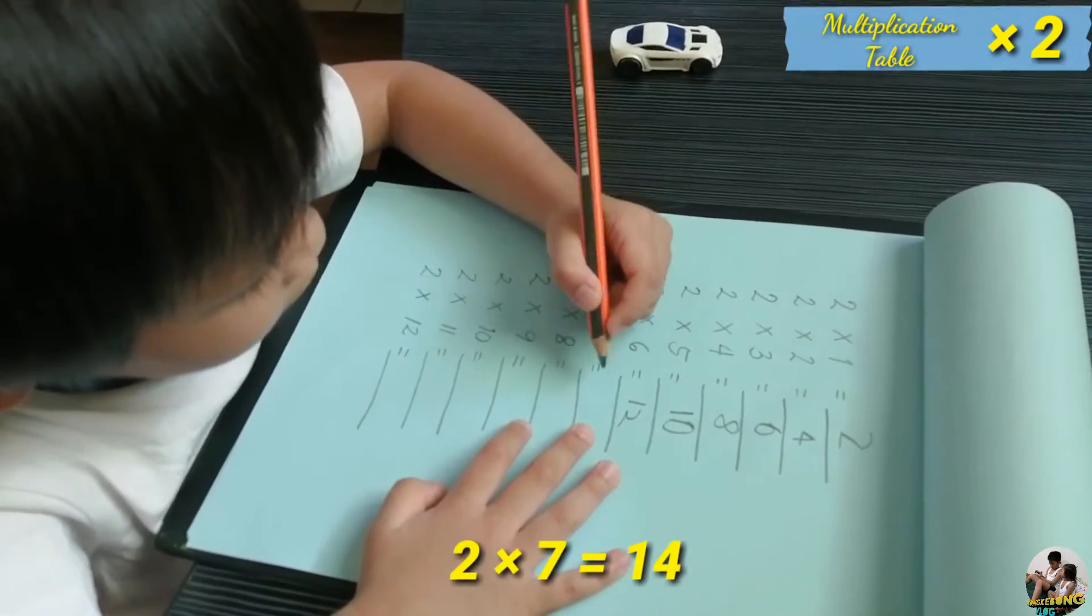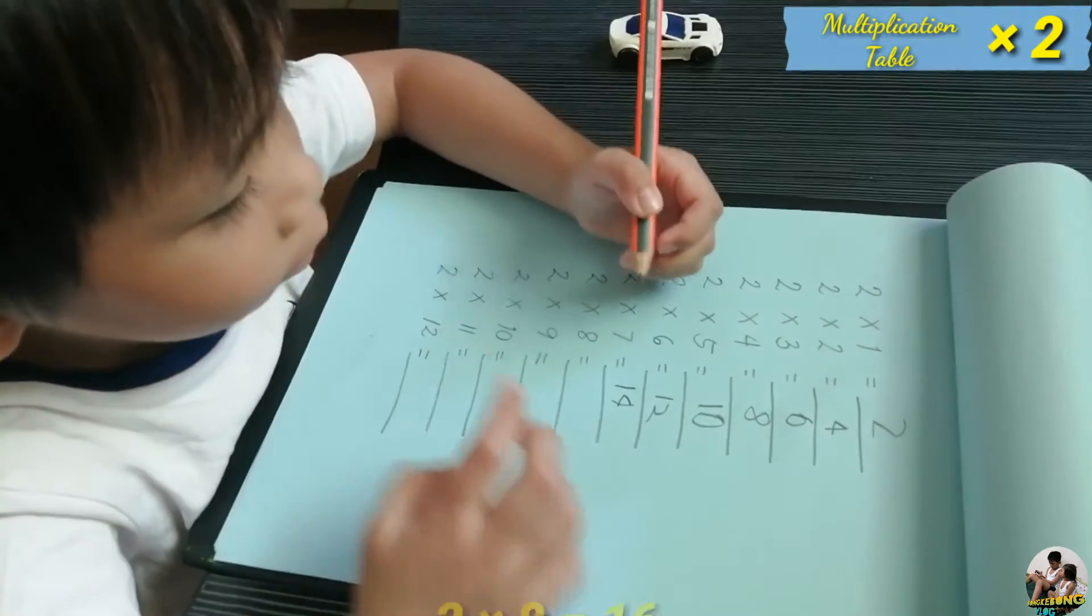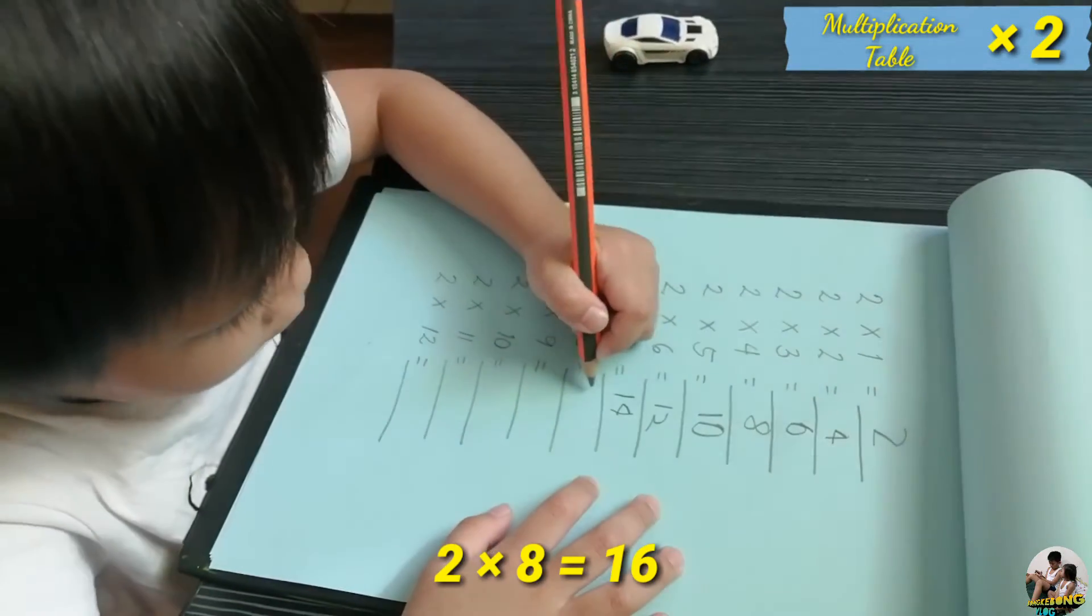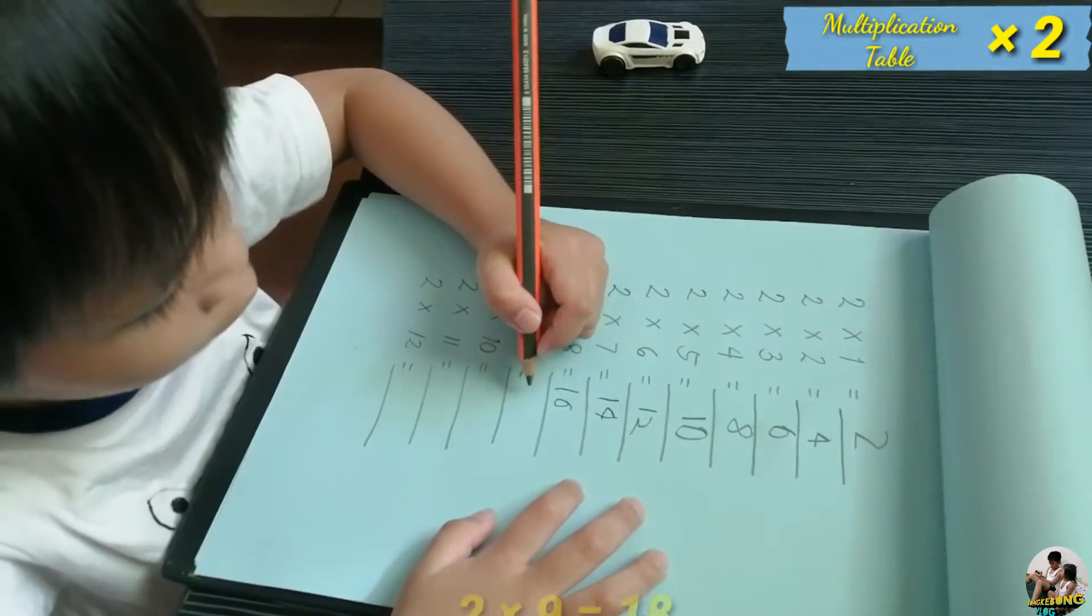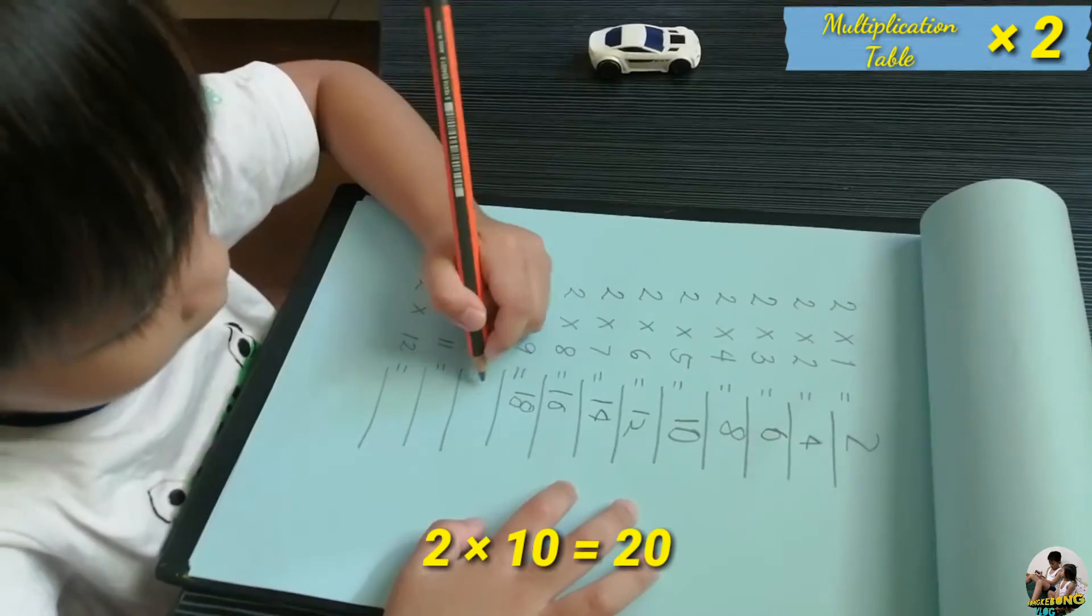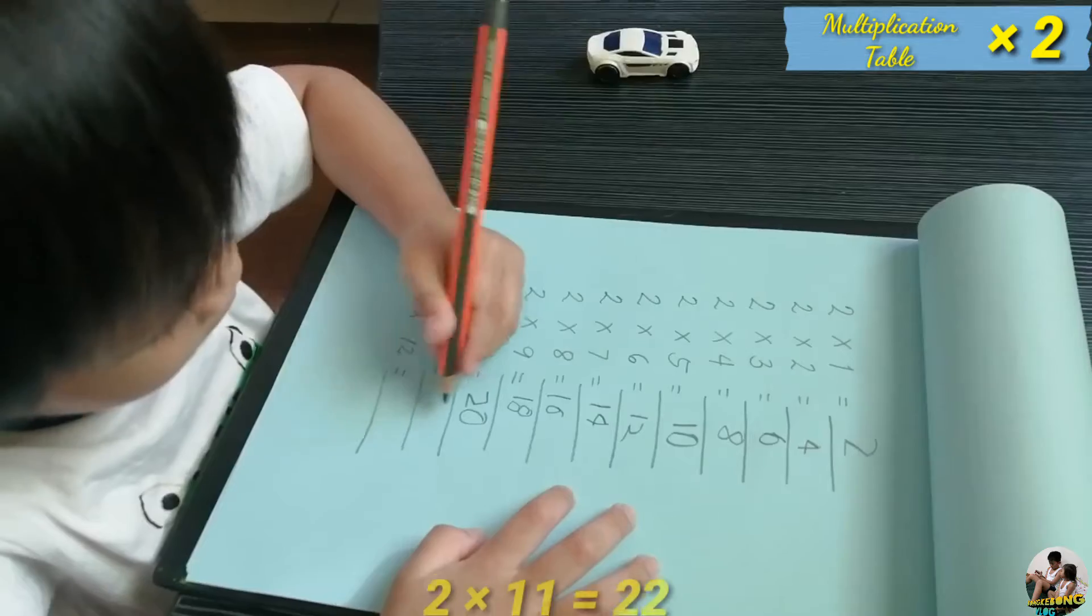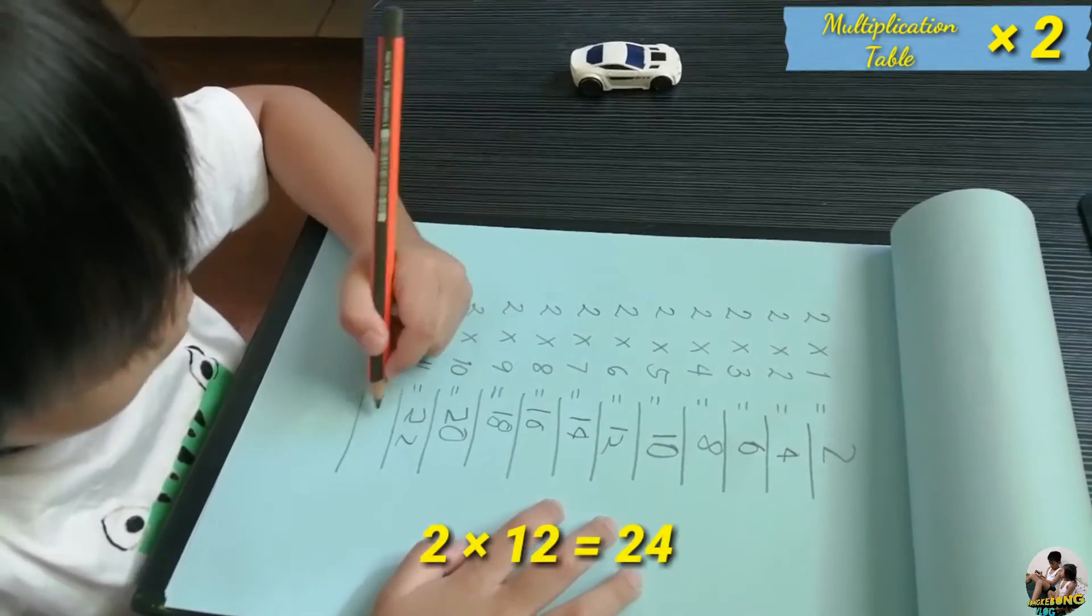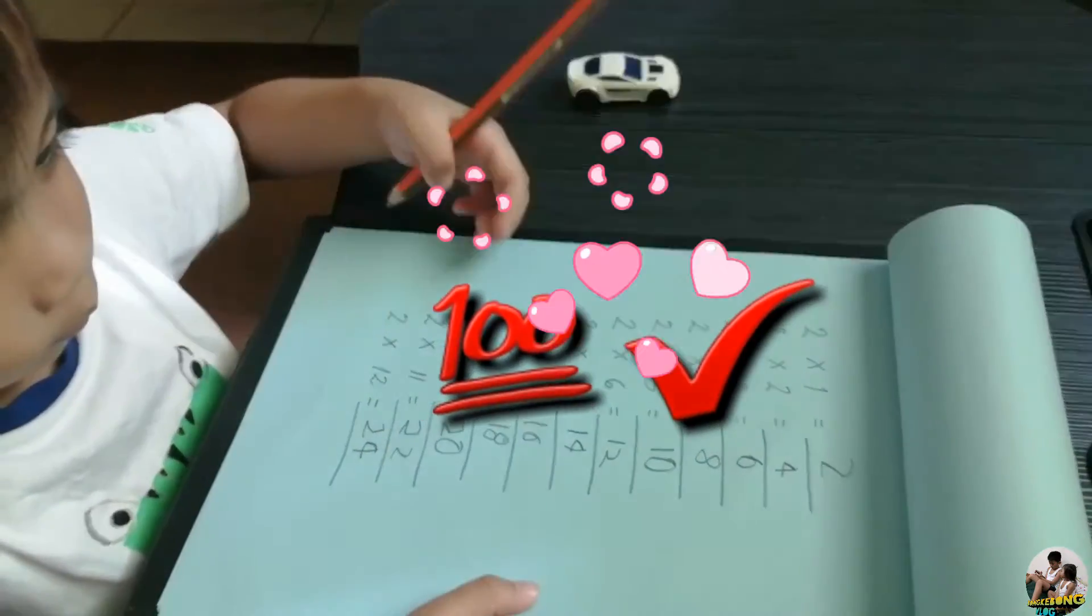Two times seven equals fourteen. Two times eight equals sixteen. Two times nine equals eighteen. Two times ten equals twenty. And two times eleven equals twenty-two. And two times twelve equals twenty-four. Great job.